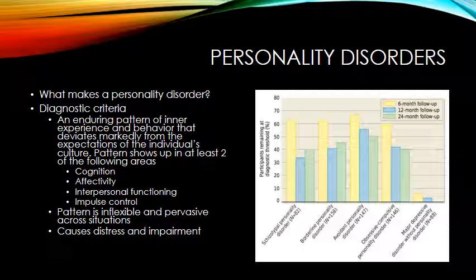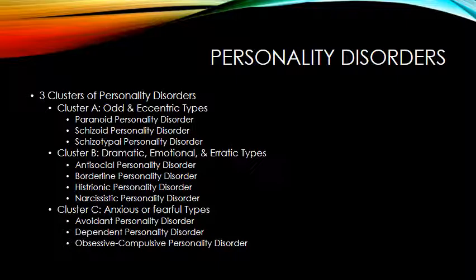The main clusters of personality disorders are grouped into three core areas. Cluster A are the odd and eccentric types. Cluster B are the dramatic, emotional, and erratic types. And Cluster C are the anxious or fearful types.